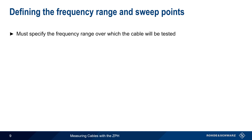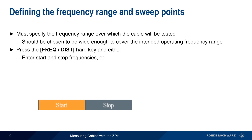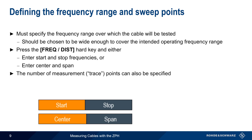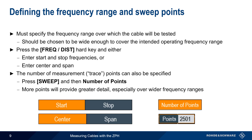We also need to specify the frequency range over which the cable will be tested. This should cover the intended operating frequency range. To define the frequency range, press the Frequency Distance Hard key, and then either enter Start and Stop frequencies, or enter these as Center and Span instead. The number of measurement or trace points over the span can also be specified by pressing the Sweep Hard key and choosing number of points. A greater number of points will provide greater detail, particularly over wide frequency ranges, but this will also increase measurement time.